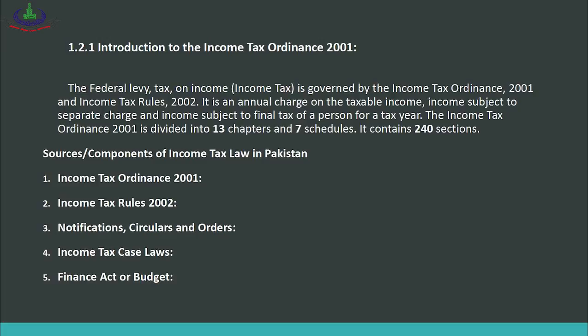The federal levy of tax on income, called income tax, is governed by the Income Tax Ordinance 2001 and the Income Tax Rules. The ordinance covers income subject to separate charge and income subject to final tax of a person for a tax year. The Income Tax Ordinance 2001 is divided into 13 chapters and 7 schedules, and it contains 240 sections.